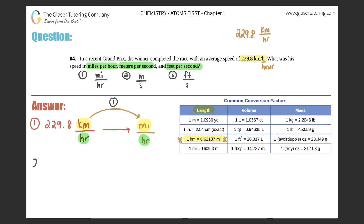So let's give it a shot. 229.8 kilometers per hour times a ratio. You don't want kilometers, so that goes on the bottom, and miles goes up on top. The conversion is one kilometer equals 0.62137 miles. The kilometers cancel, and what you have left is miles per hour — that's exactly what they wanted. Those are the two units that can't cancel. So in this case it's just a direct one-step conversion.